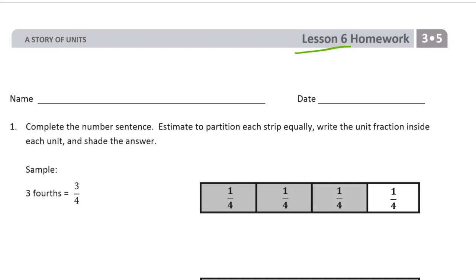This is the homework for Lesson 6 of Module 5 of Grade 3. Please get your name on here first. We're completing the number sentence. It says estimate to partition each strip equally and write the unit fraction inside each unit and shade the answer.